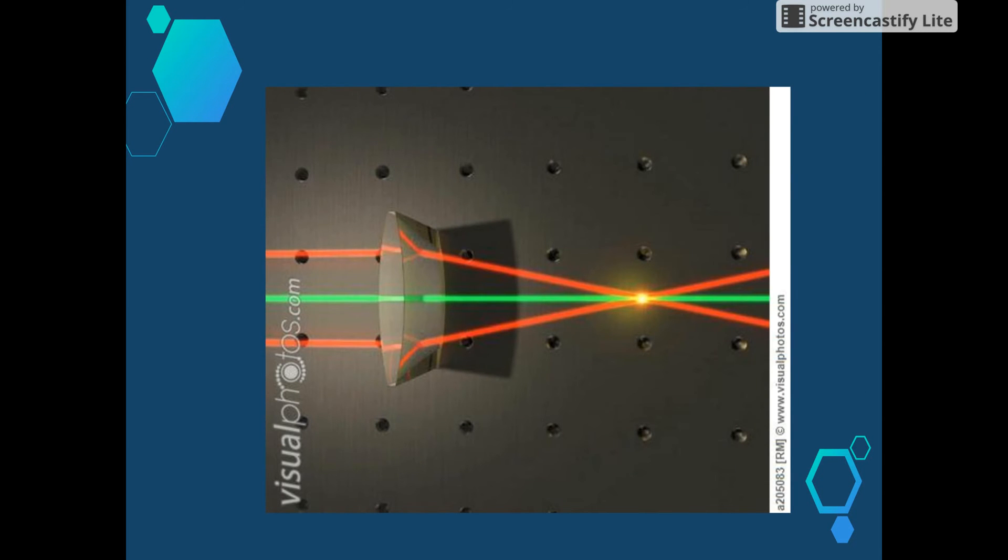When light is passed through a bi-convex lens like this one here on the screen, the rays are refracted towards the central point known as the focal point. The rays then cross and diverge or spread out from one another from that point.